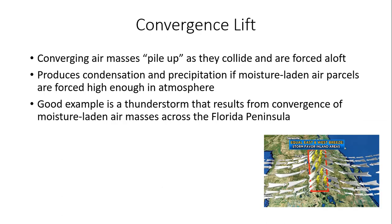Another very important type of lift is convergence lift — low-level convergence. Converging air masses pile up as they collide, and since they can't go down to the ground, they must go upward and are forced to loft. Convergence lifting produces the condensation effect — cooling, rising air condenses and forms clouds — and if clouds grow thick enough in a summertime situation with moist, unstable air, we can get precipitation at the Earth's surface.